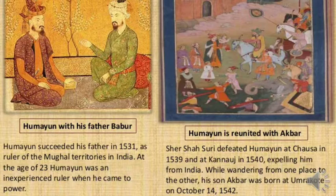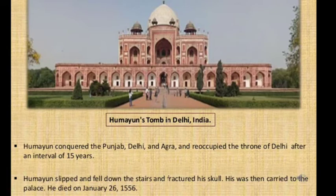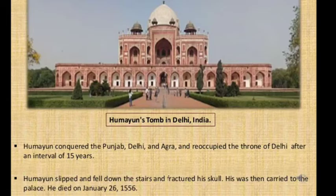Sher Shah Suri defeated Humayun at Chosa in 1539 and at Kanauj in 1540, expelling him from India. While wandering from one place to another, Humayun's son Akbar was born at Amarkot on 14th October 1542. Humayun was an able ruler who conquered Punjab, Delhi, and Agra, recapturing the throne of Delhi after an interval of 15 years. But on 26th January 1556, he slipped and fell from the stairs, fractured his skull, and died.